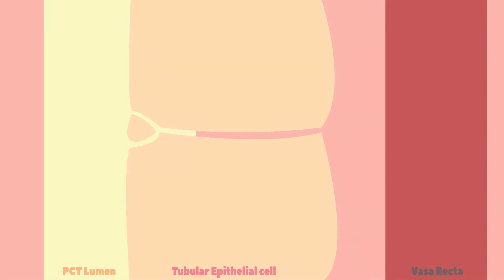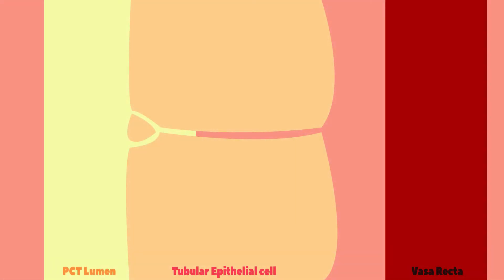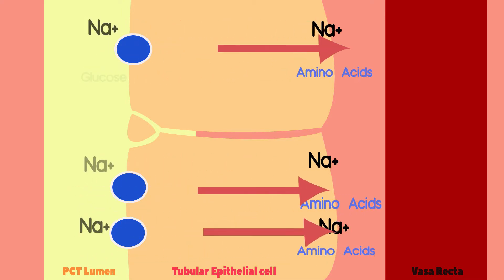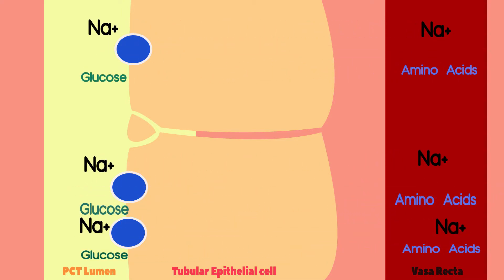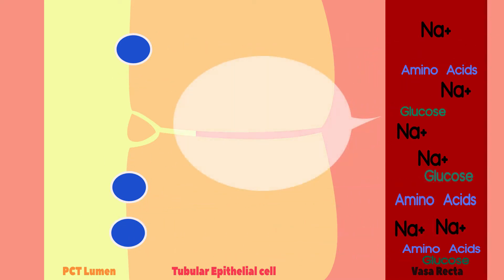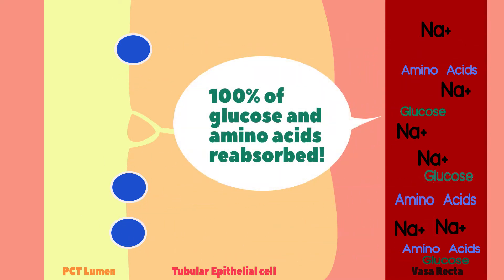The development of such a strong sodium gradient from ultrafiltrate to blood powers co-transporter proteins for glucose and any amino acids that may be present. As such, 100% of the glucose and amino acids that left the blood in the glomerulus is reabsorbed through the cells and back into the blood.